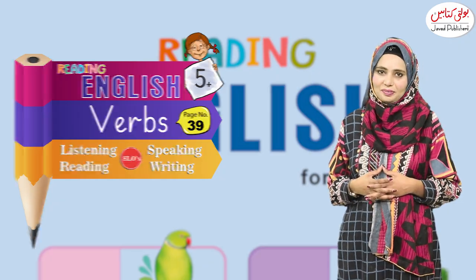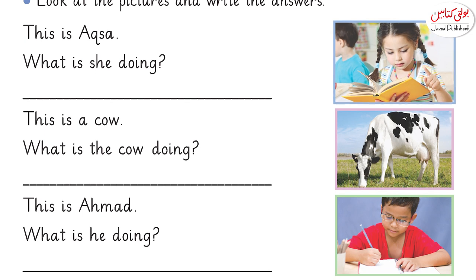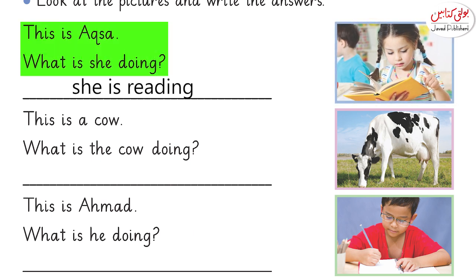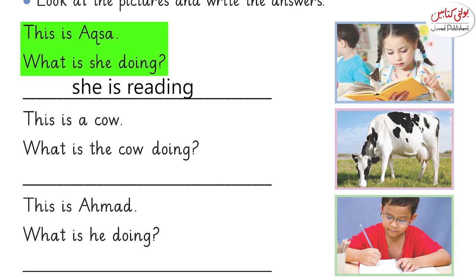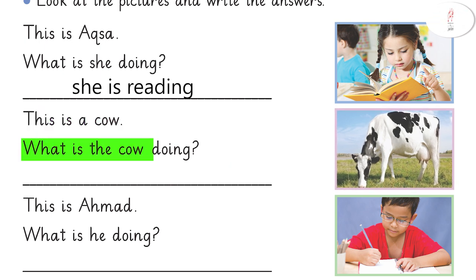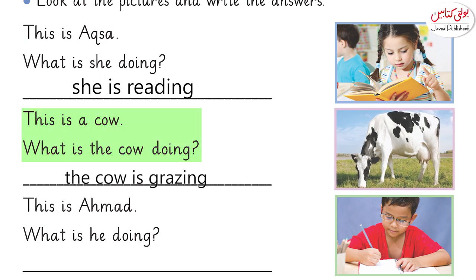Students, look at the pictures and write the answers. Tell me, who is she? This is Aksa. What is she doing? Yes, she is reading. What is this? This is a cow. What is the cow doing? Yes, the cow is grazing. Very good.